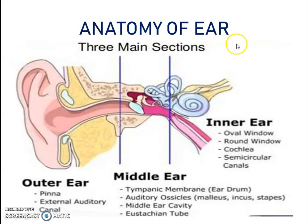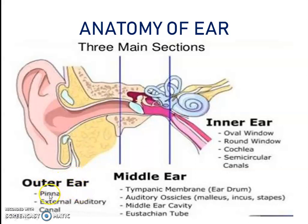Anatomy of Ear: the ear is divided into three sections — Outer Ear, Middle Ear, and Inner Ear. Important parts are: Outer Ear — Pinna and Canal; Middle Ear — Tympanic Membrane or Ear Drum; Inner Ear — Cochlea.